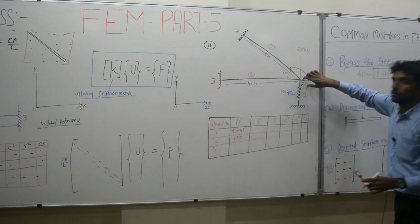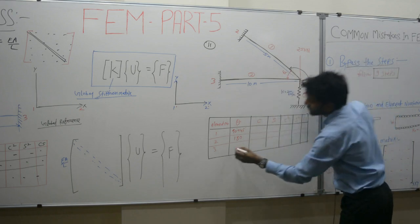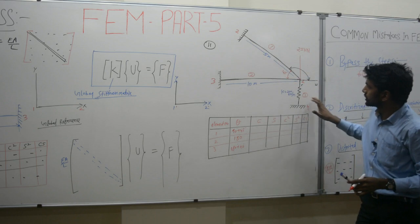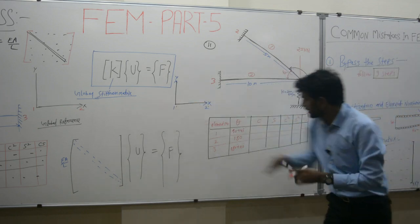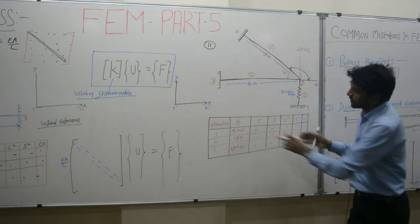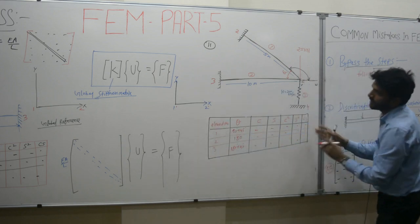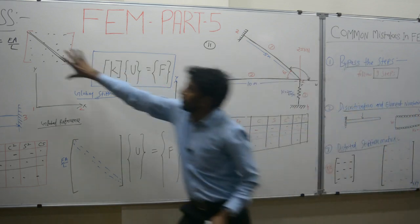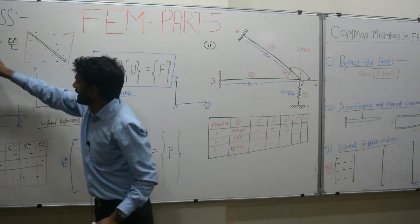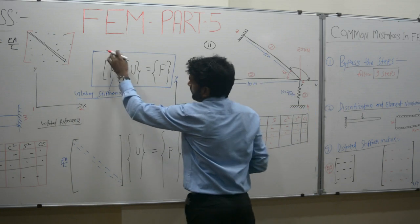For element 3, measuring anti-clockwise from the reference gives 180 plus 90 equals 270 degrees. Once orientations for elements 1, 2, and 3 are found using the global reference frame, fill out the table with cosθ and sinθ and their corresponding terms. Then export these values into the stiffness matrix entries, with EA/L as the known parameter, to find the local stiffness matrices. After that, form the global stiffness matrix.